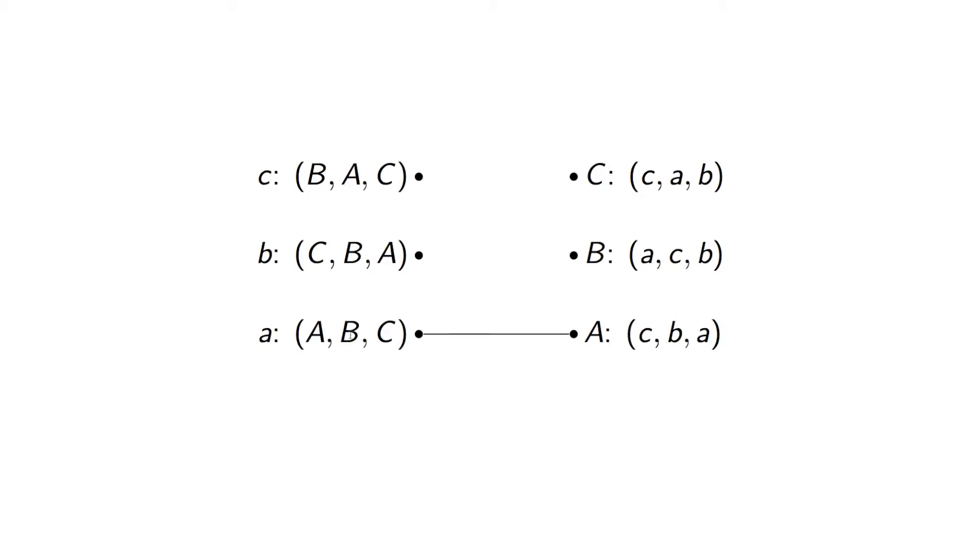We then pick another unmatched suitor. For example, let's take little C. Little C will match up with big B. And finally, little B will be matched with big C. And now this is a stable matching. No one has an incentive to change. There's no pairing that blocks this matching.